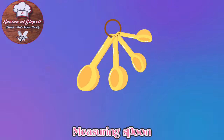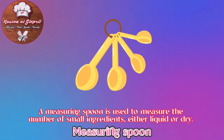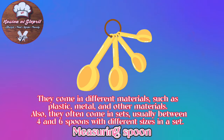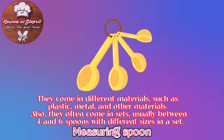Measuring Spoon: A measuring spoon is used to measure small amounts of ingredients, either liquid or dry. They come in different materials such as plastic, metal, and others. They often come in sets, usually between four and six spoons with different sizes in a set.